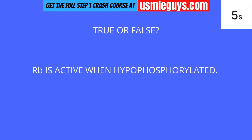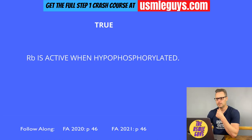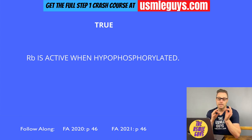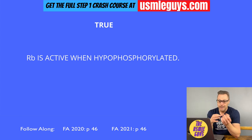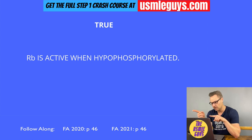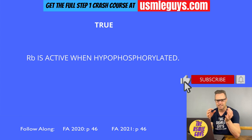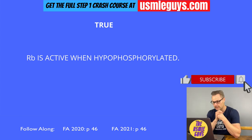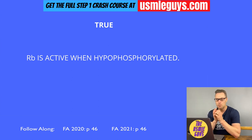This is true. When it comes to tumor suppressors, the P53 protein will induce P21, which causes CDK inhibition, which results in RB hypophosphorylation, which activates RB. This results in halting the progression of G1 into the S phase. If we get a mutation of a tumor suppressor gene, it prevents this from happening and we get uncontrolled, unrestrained cell division.